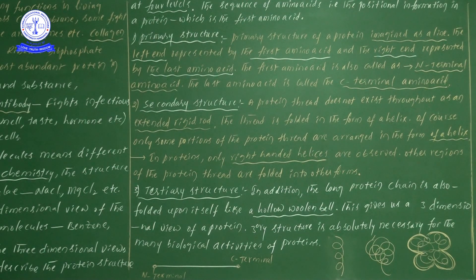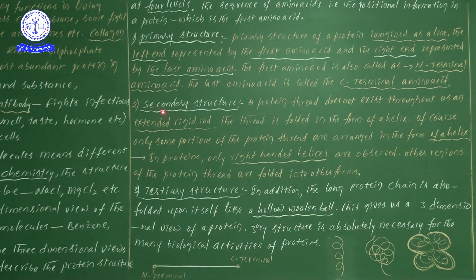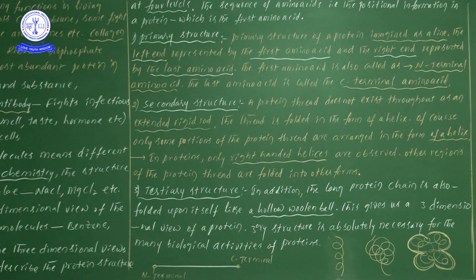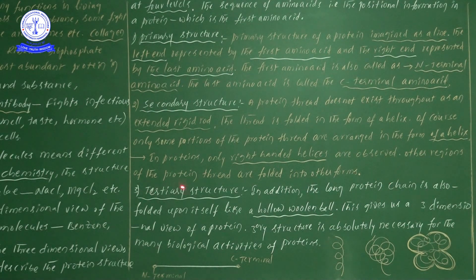In proteins, only right-handed helixes are observed — this is an important point. There are no left-handed helixes in proteins. Other regions of the protein thread are folded into other forms.